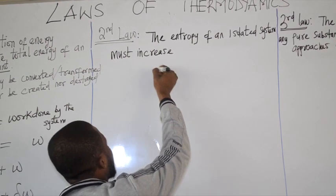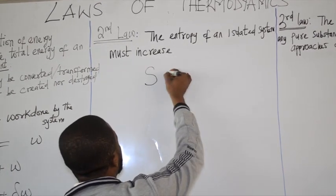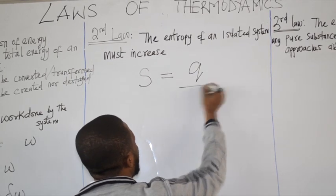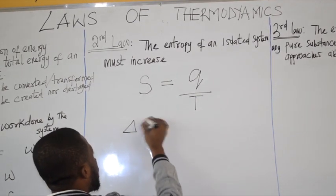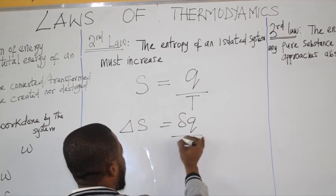So entropy is symbolized S. Mathematically, it is equal to heat over temperature. So the change of entropy is equal to the partial derivative of Q over T.